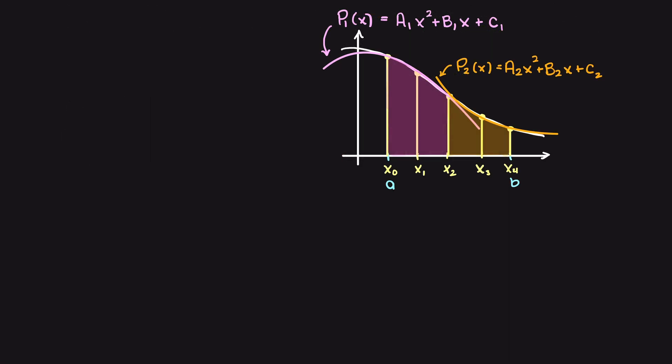Moving back to our earlier diagram, we wanted to approximate the area under our curve between points a and b, for which we fit two polynomials, p1 and p2, which are shown here.